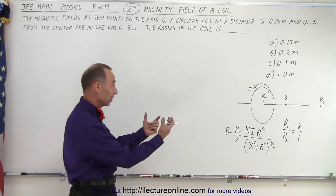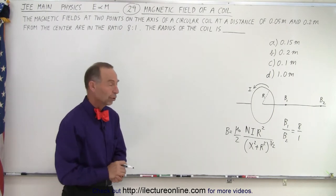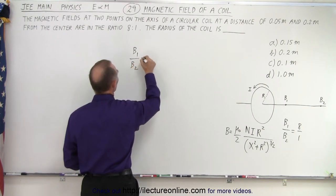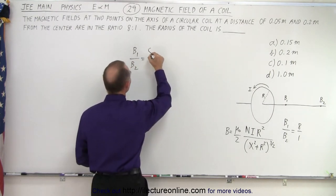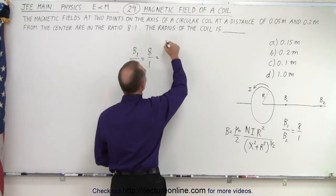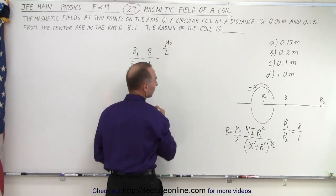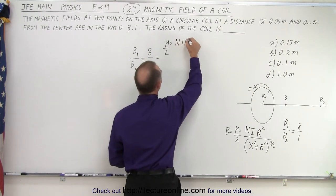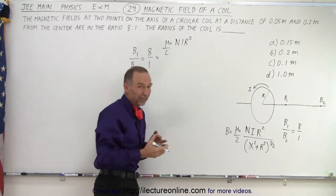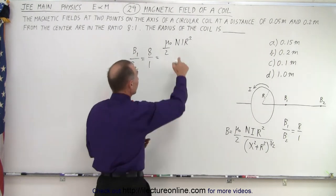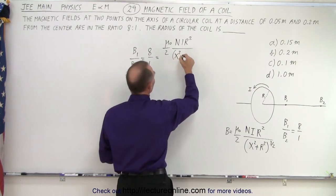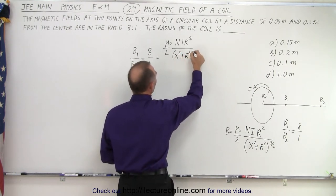Now all it is is just simply putting that as a ratio. So now we're going to write B1 over B2 which is equal to 8 to 1 which is therefore equal to mu sub naught divided by 2 times n i r squared. Now notice that will be the same in both cases because it's the same coil so same number of loops, same current, same radius divided by the quantity x squared plus r squared.